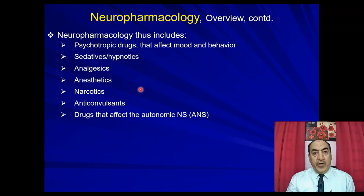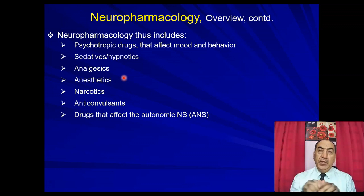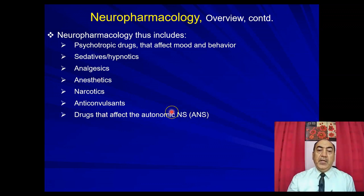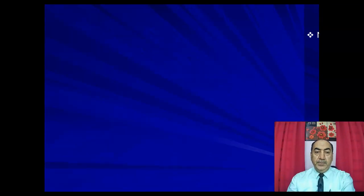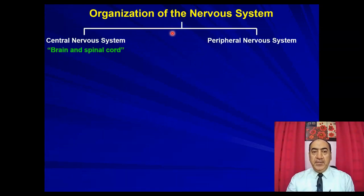Neuropharmacology also includes anticonvulsants and drugs that affect the autonomic nervous system. All of these drugs are primarily employed for their effect on the nervous system. In this series, we will focus on the autonomic nervous system.